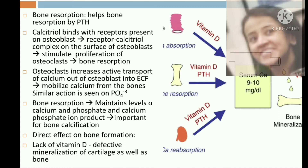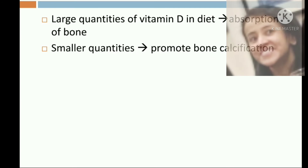Calcitriol also increases exit of phosphate, thereby increasing phosphate concentration. The calcium-phosphate ion product remains in the normal range through bone resorption, and this ion product is very important for bone calcification. Vitamin D is also important for bone mineralization because it stimulates osteoblasts, has alkaline phosphatase-like activity, and increases osteocalcin synthesis. When present in small quantities it promotes bone calcification, but in large quantities it causes bone resorption.